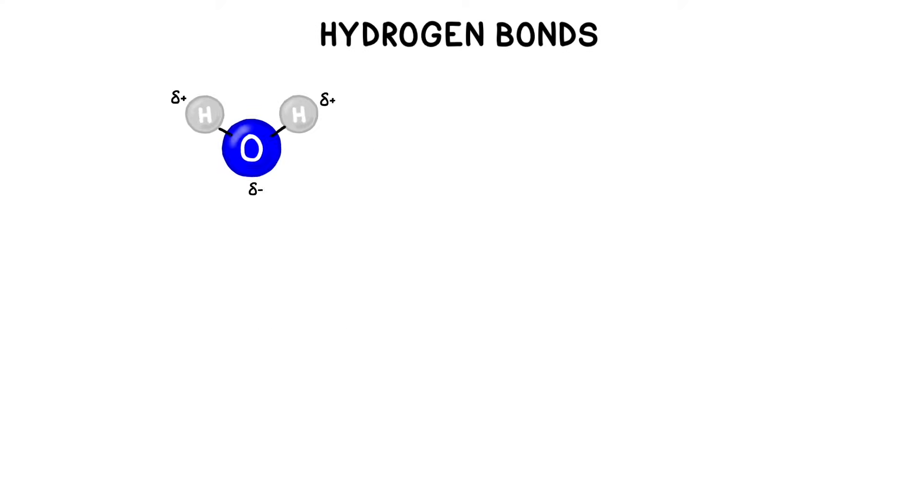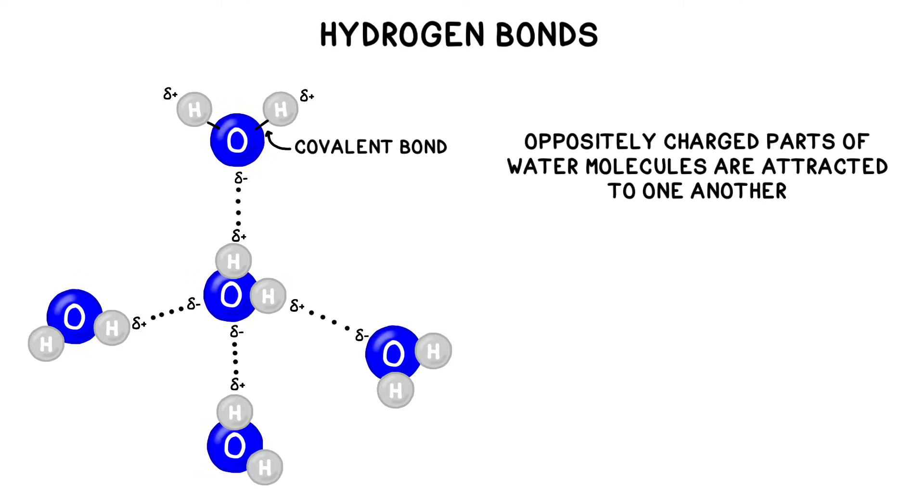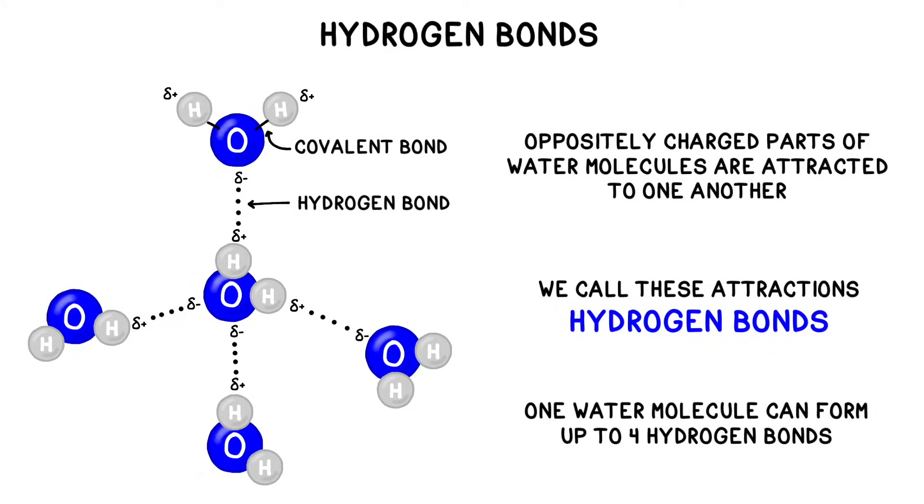Oppositely charged parts of water molecules are attracted to one another, negative oxygen and positive hydrogens, in what we call hydrogen bonds. The attractions between water molecules can also be called electrostatic forces. One water molecule can form up to four hydrogen bonds at a time.